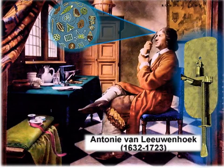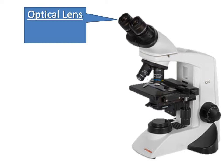The ones used in high school classrooms are compound light microscopes, and they have two sets of lenses that magnify each other. So if your objective lens magnifies an image 40 times, and your optical lens magnifies that image another 10 times, then your total magnification would be 400.